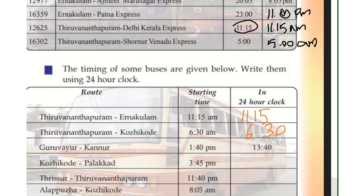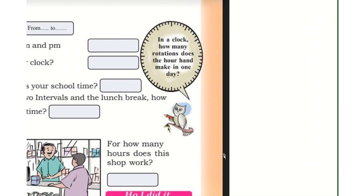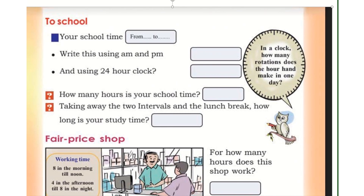Converting more examples: 13:00 is 1 PM. 15:45 is 3:45 PM. 23:40 is 11:40 PM. 8:45 AM stays as 8:45 AM. 16:45 is 4:45 PM. 20:45 is 8:45 PM. 18:45 is 6:45 PM.